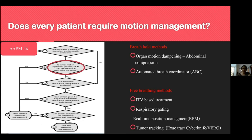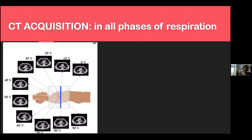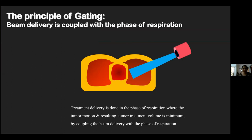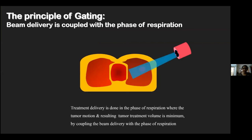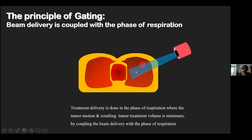Respiratory motion management techniques include active methods such as breath-hold and free-breathing methods. At our institute, we typically use respiratory gating. A simulation CT is acquired through all phases of respiration; maximum intensity projection images are selected and contouring is performed on these. The principle of gating is that beam delivery is coupled with the phase of respiration — the beam is on only when the tumor is in its path, and switches off at other times.